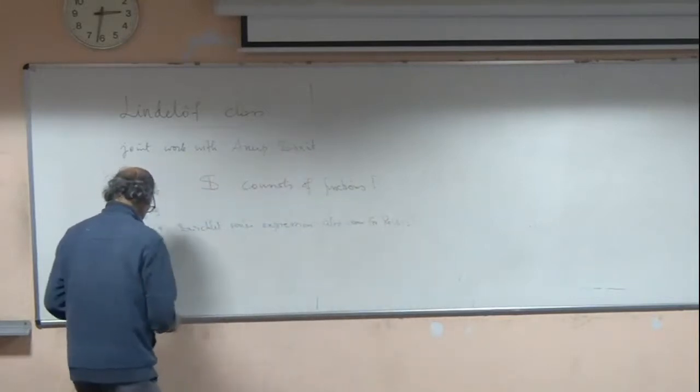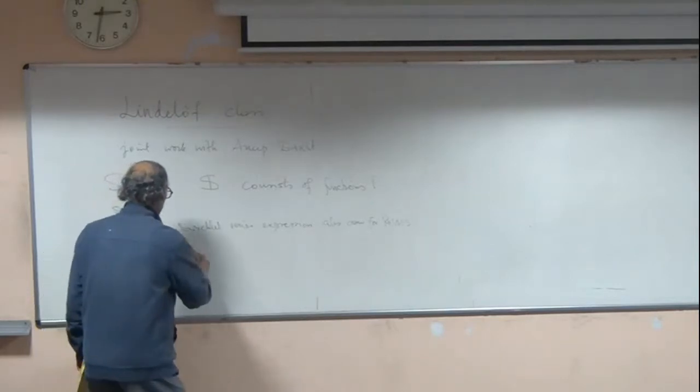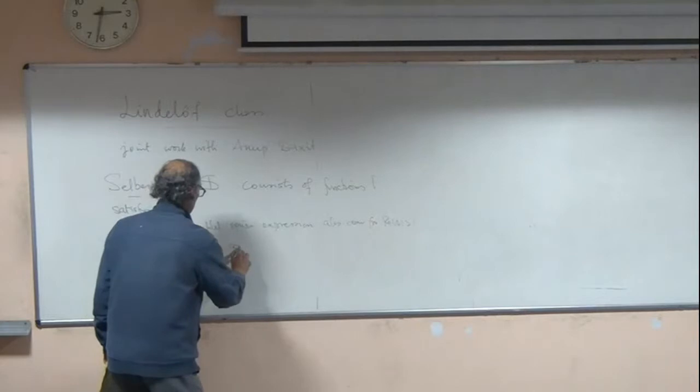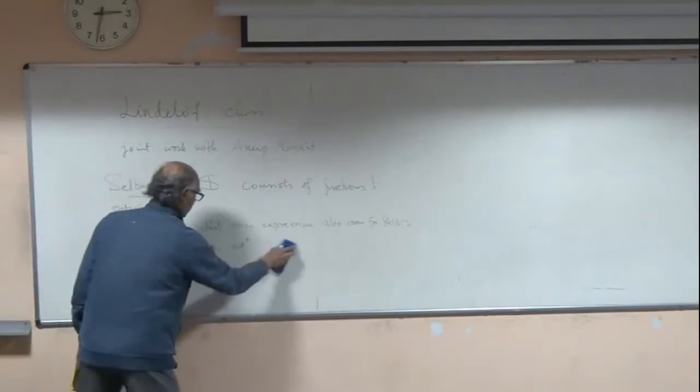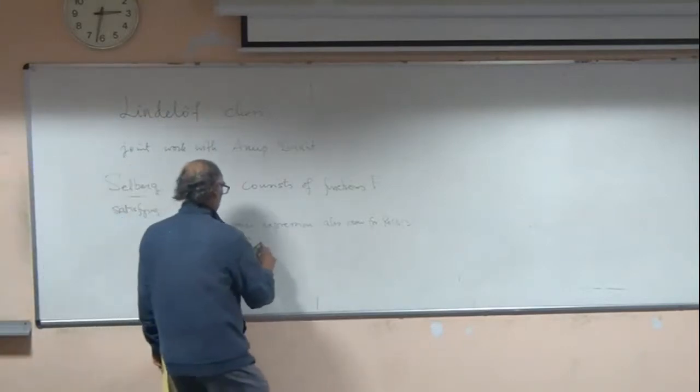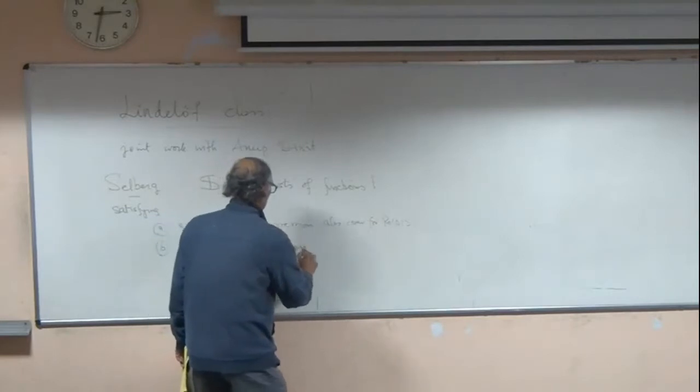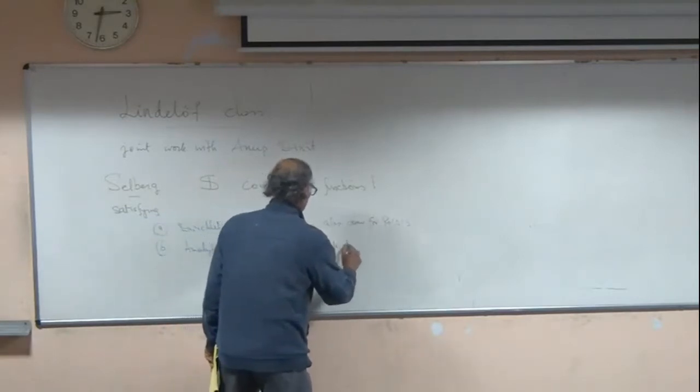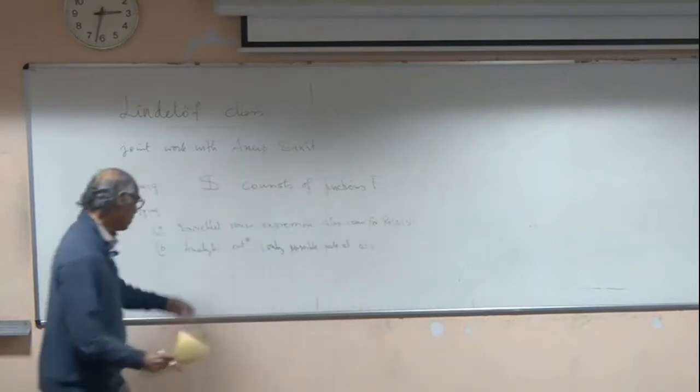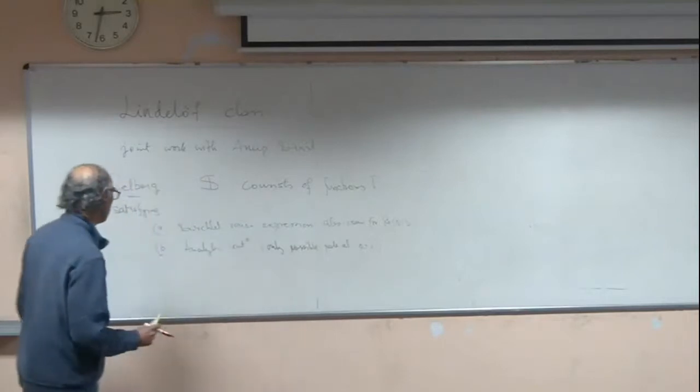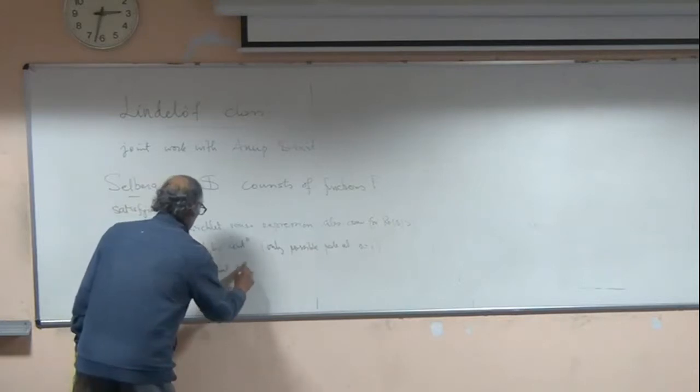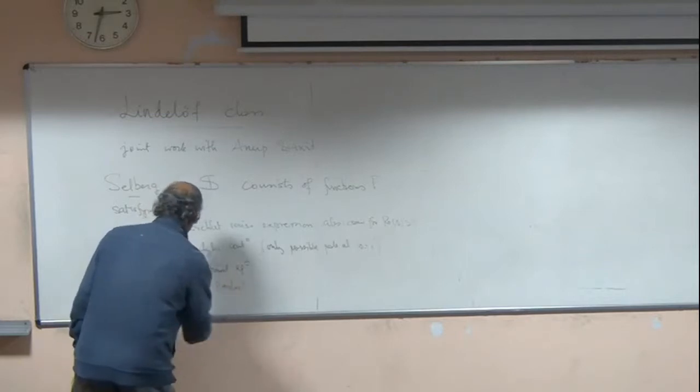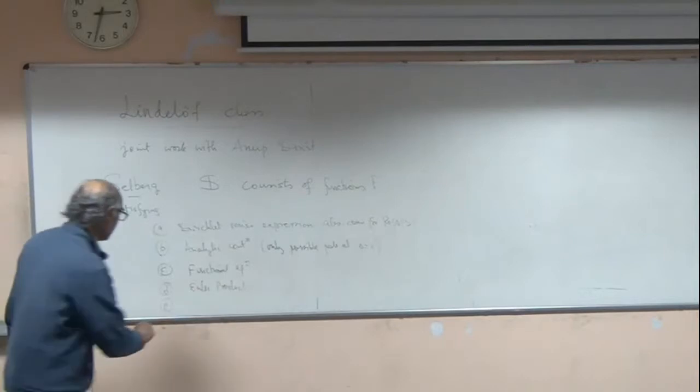It has analytic continuation as a function of order one - more precisely, meromorphic continuation with the only possible pole at s equals one. C is that it has a functional equation. D is that it has an Euler product. E is that it satisfies the Ramanujan hypothesis.